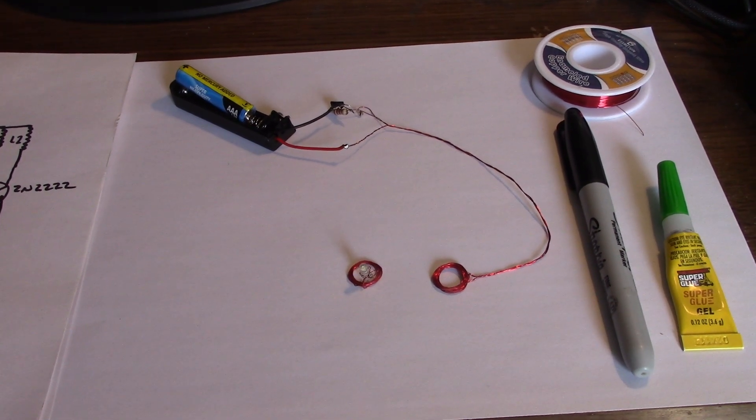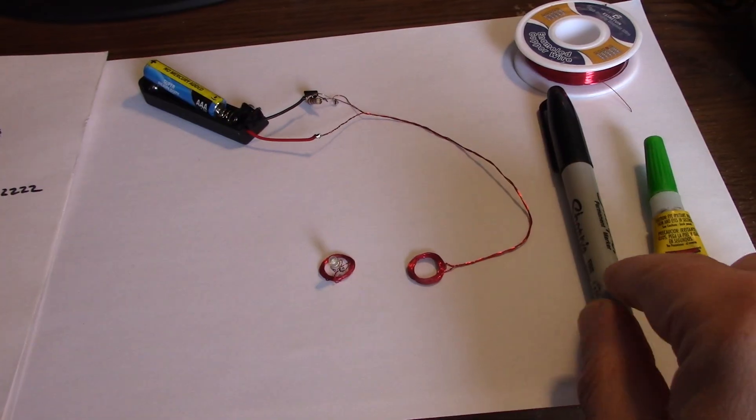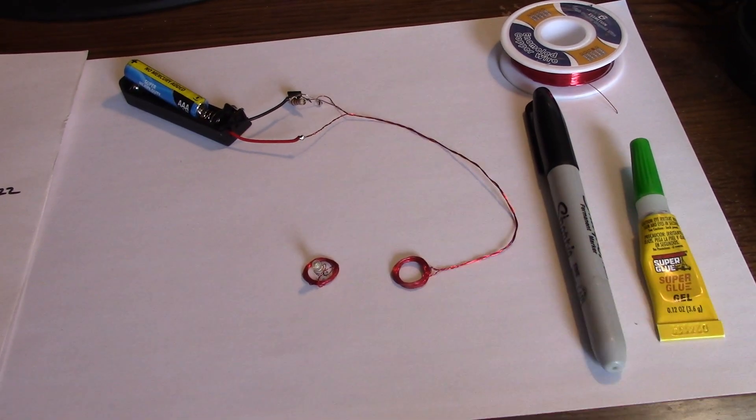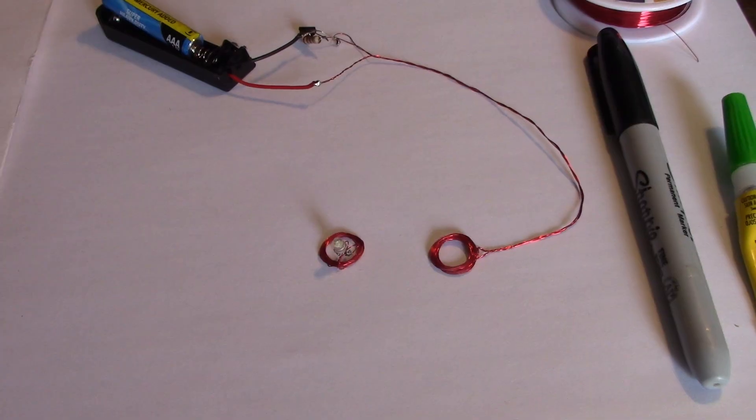When you make coils that are very small, in this case they were wound on the end of a Sharpie, then they often don't work very well at all.